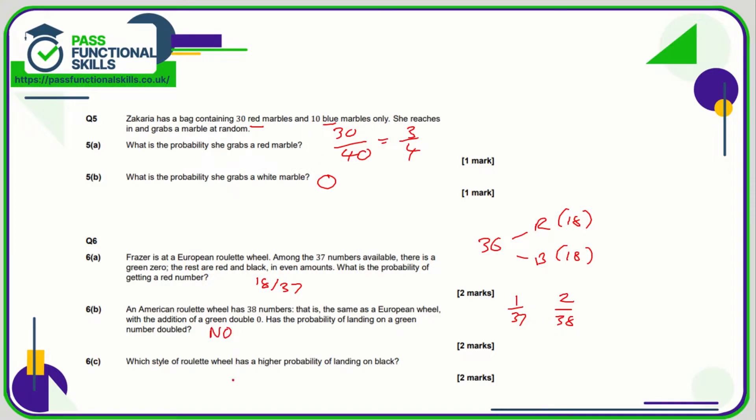Which style of roulette wheel has a higher probability of landing on black? Well, in the European one it's 18 out of 37, whereas in America it's 18 out of 38, so you're more likely on the European one to land a black.